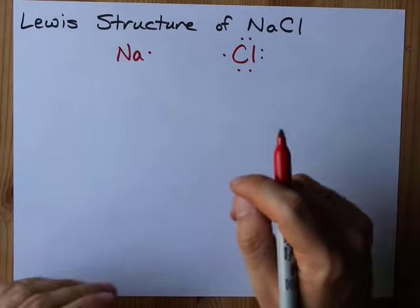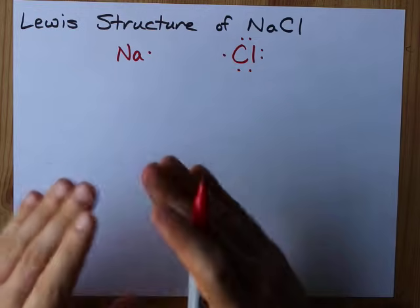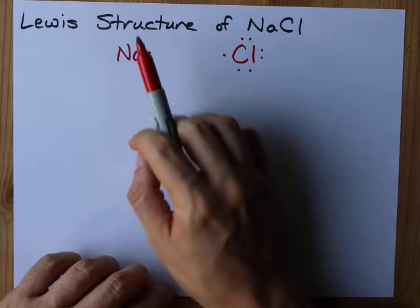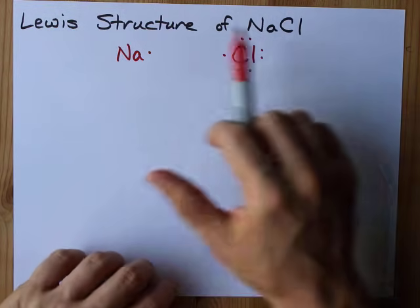This is not the final Lewis structure for NaCl because NaCl is made of Na+ with Cl-. Metals give up their electrons to non-metals.